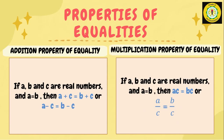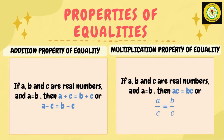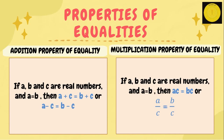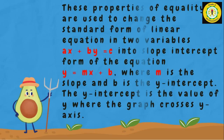Second, the multiplication property of equality. It states that if a, b, and c are real numbers and a equals b, then a times c equals b times c, or a divided by c equals b divided by c. In other words, we can always multiply or divide the same quantity or number to both sides of an equation.